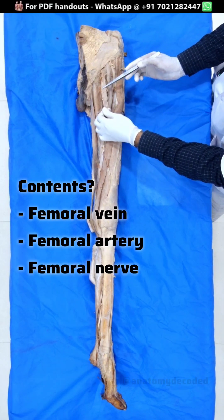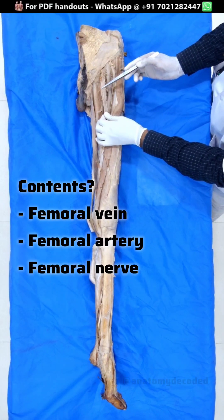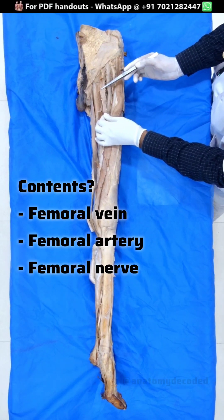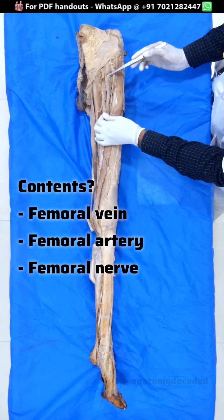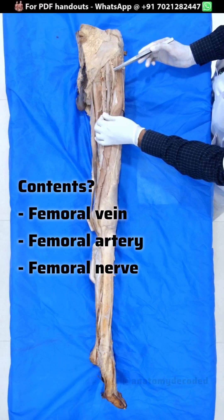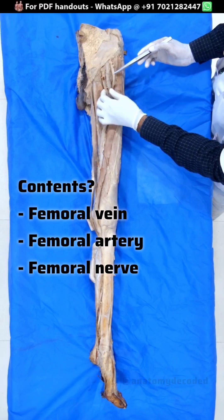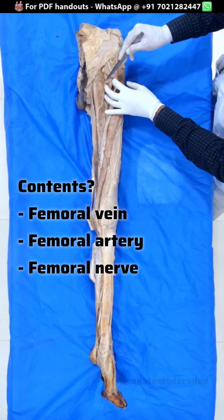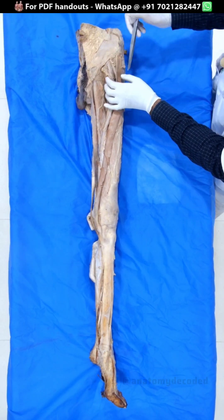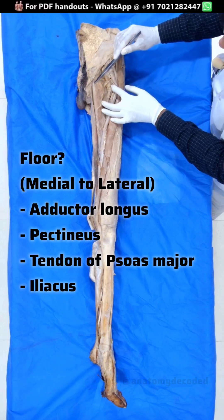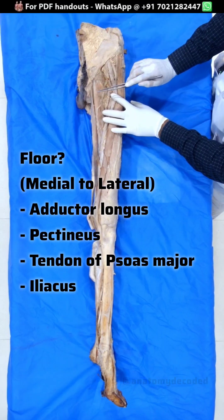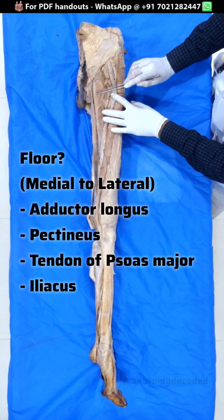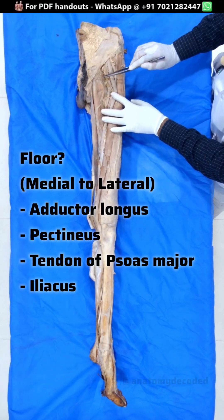The contents of the femoral triangle, from medial to lateral, include: this is the femoral vein, this artery is the femoral artery, and this nerve is the femoral nerve.